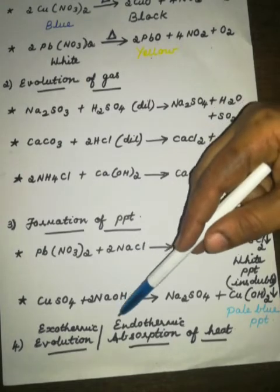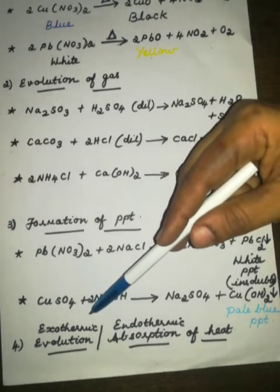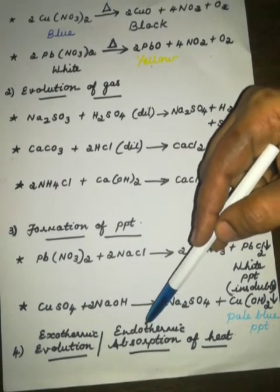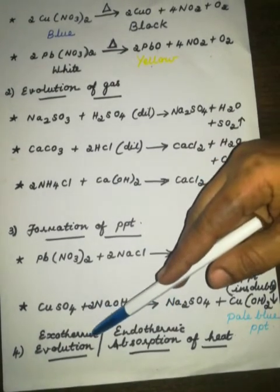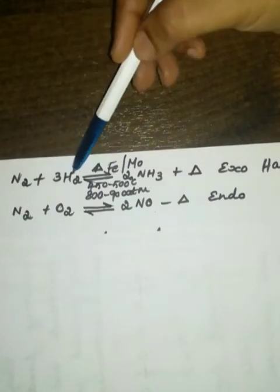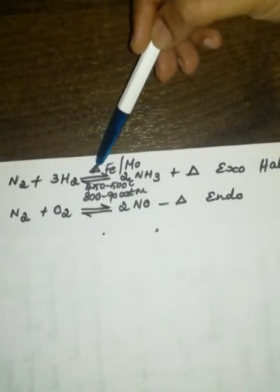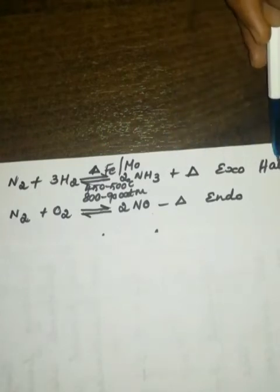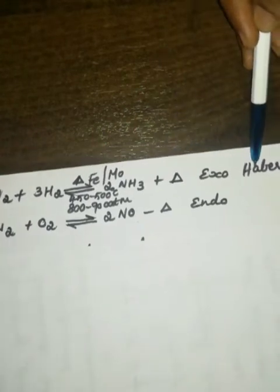The fourth external indication which we are going to see here is exothermic-endothermic reaction. Exothermic means evolution of heat. Endothermic means absorption of heat. See, nitrogen reacts with hydrogen to form ammonia. So you have learned this reaction, that is, name of process, we call it as Haber's process.